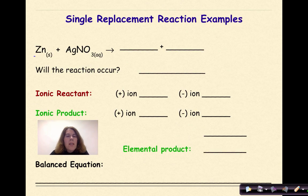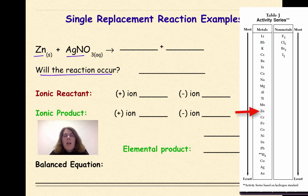Let's look at some examples. Zinc plus silver nitrate. Will the reaction occur? Let's look at table J. Here's the location of zinc. Here's the location of silver. We can see that zinc is higher than silver. So will this reaction occur? Yes it will.